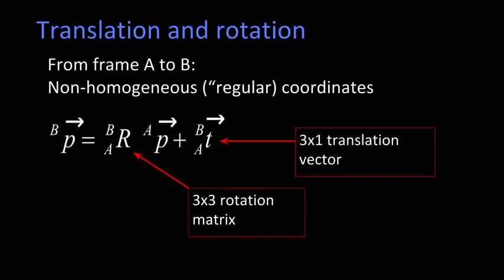So to review translation and rotation. From frame A to B, to express this in non-homogeneous or regular coordinates, we take the location of some point P in the A frame, we rotate it, and then we translate it.